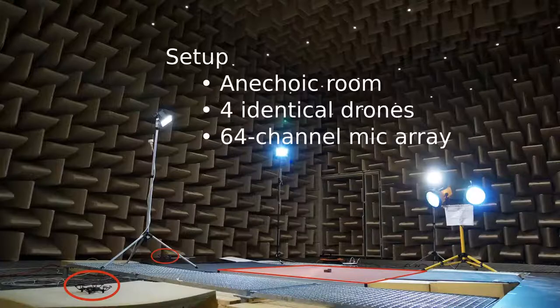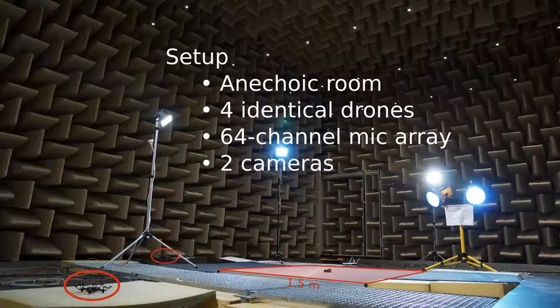On the ground, we put a microphone array with 64 channels. Its dimensions are about 1.5 meters by 1.5 meters. For optical tracking, we also used two GoPro cameras, one of which is positioned in the center of the array and the other one is on the wall outside the field of view here.